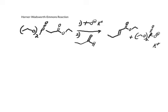We're starting with a phosphonate ester, and we're going to treat it first with a strong base to deprotonate it. Then we're going to treat it with an aldehyde or a ketone.